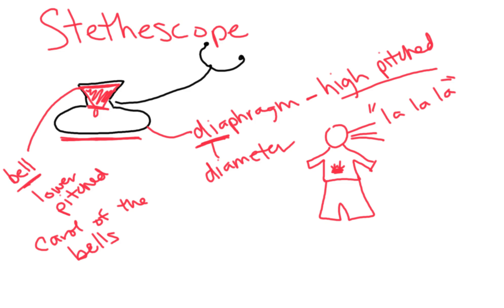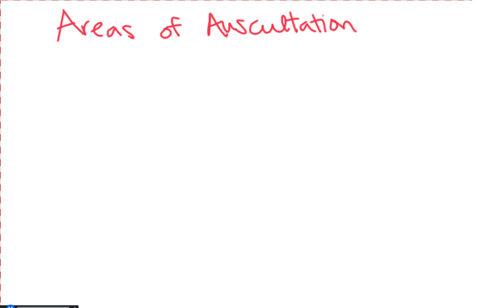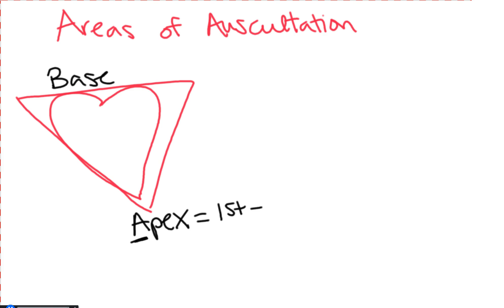Now let's talk about areas of auscultation—where on the chest to listen for different heart sounds. Your heart has an apex and a base. I remember it like this: apex, A is the first letter of the alphabet and where you can best hear S1. Base, B is the second letter of the alphabet and conveniently where you can best hear S2.